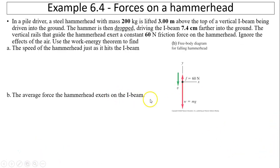Another example. So in a pile driver, a steel hammer with a mass 200 kilograms is lifted 3.00 meters above the top of a vertical I-beam being driven into the ground. The hammer is then dropped, driving the I-beam 7.4 centimeters further into the ground. The vertical rails that guide the hammerhead exert a constant 60 newton friction force on the hammerhead. Ignore the effect of air. Use the work energy theorem to find the speed of the hammerhead just as it hits the I-beam.